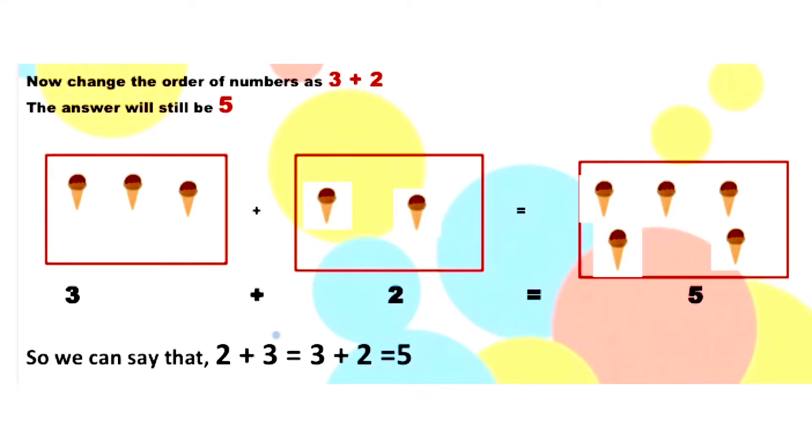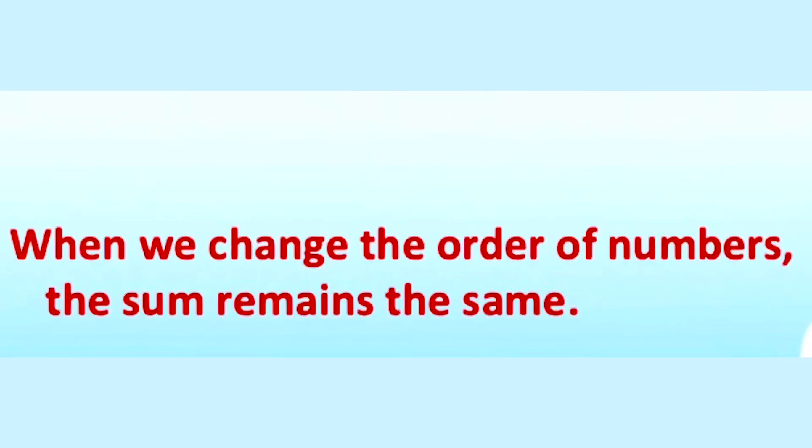Now change the order of numbers as three plus two. Then also the answer will be the same. Here in the first box, there are three ice creams, and in the second box, there are two ice creams. Then we must add the first two boxes. That is three plus two. What is three plus two? We must add two with three. That is four, five. The sum is five. Here three and two are addends and the sum is five. So we can say that two plus three equals three plus two. For both, the answer is the same. For both, five is the sum. When we change the order of numbers, the sum remains the same. That is the order property of addition.